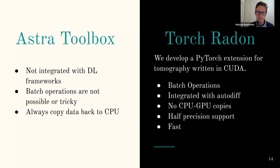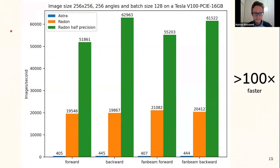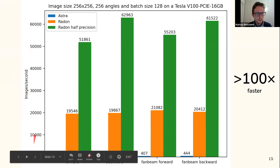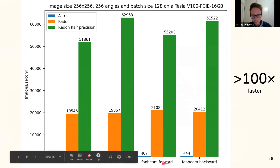Our CUDA extension supports batch operations, is integrated with automatic differentiation, always works on the GPU avoiding copies, and supports half-precision training — commonly used in machine learning — to make the library even faster. The speed comparison shows our library, especially with half precision, is more than two orders of magnitude faster than ASTRA toolbox, covering both parallel and fan projection, both forward and backward.